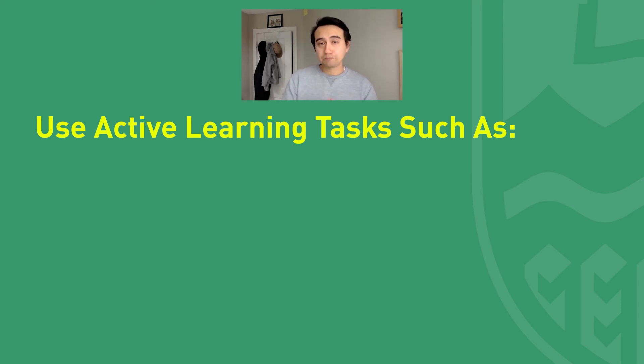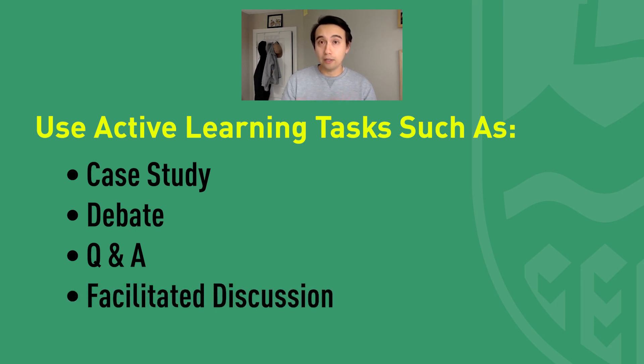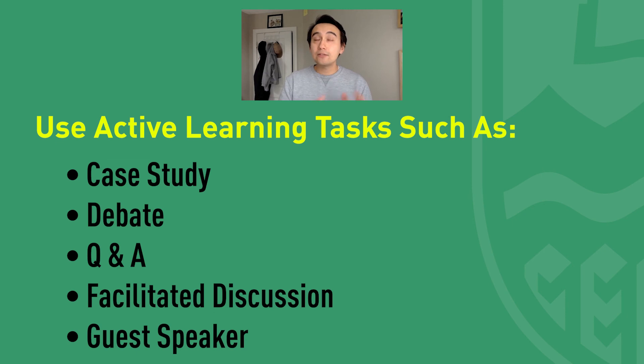Active learning might look like having students go over a case study or host a debate. You can host a Q&A, or use facilitated discussion formats like snowballing or jigsawing, or have a guest speaker come in. You can asynchronously have students prepare questions in advance. To summarize: the two big benefits of asynchronous instruction are flexibility and reflection. The two big benefits of synchronous instruction are immediacy and building a sense of community. Avoid lecture-based teaching in your synchronous instruction and use active learning techniques instead.